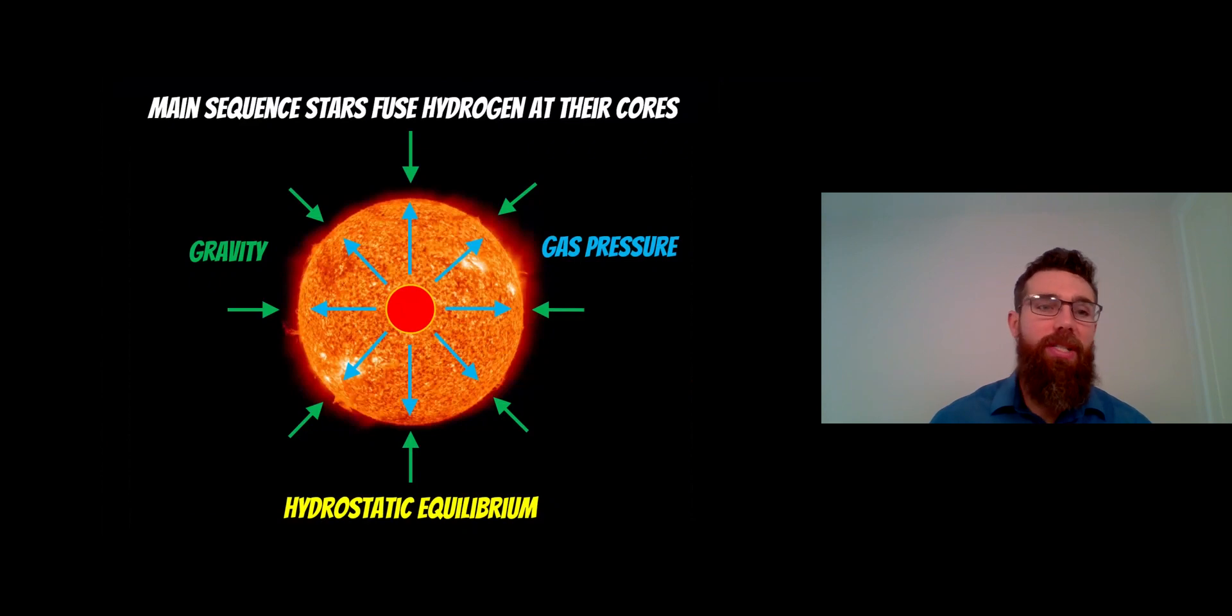So if we first revisit a main sequence star, when a star is on the main sequence it is fusing hydrogen at its core and you're getting some outward pressure from that, some radiative pressure, which balances your gravitational forces. So they're in this hydrostatic equilibrium and it's part of the star evolution where they spend the majority of their time. They're in a balance between this outward pressure and these gravitational forces.